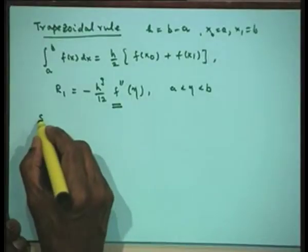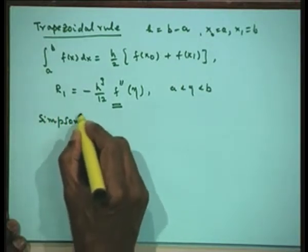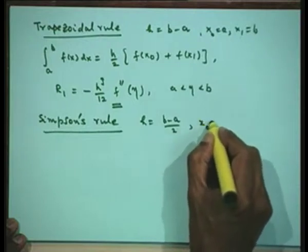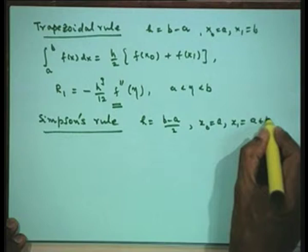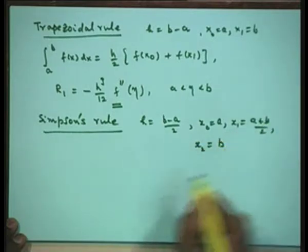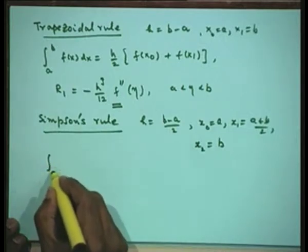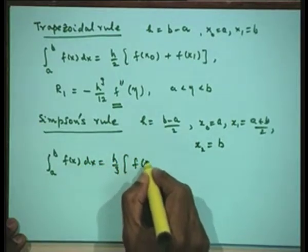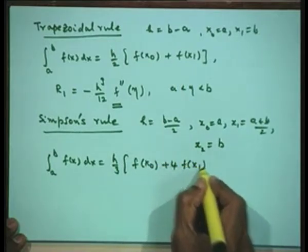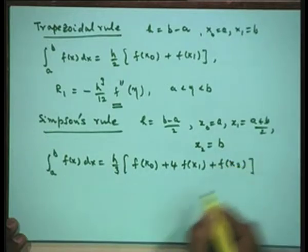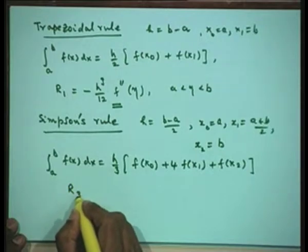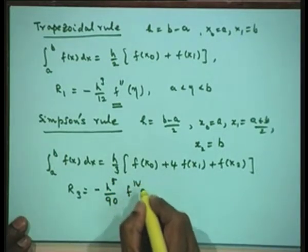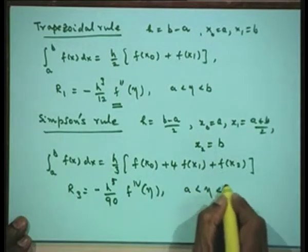Next we considered the Simpson's rule using three points, where h = (b-a)/2 giving three points: x0 = a, x1 = (a+b)/2, and x2 = b. The formula is: integral from a to b of f dx = h/3 · (f(x0) + 4f(x1) + f(x2)). The corresponding error is R3 = -h⁵/90 · f''''(η), where a ≤ η ≤ b.